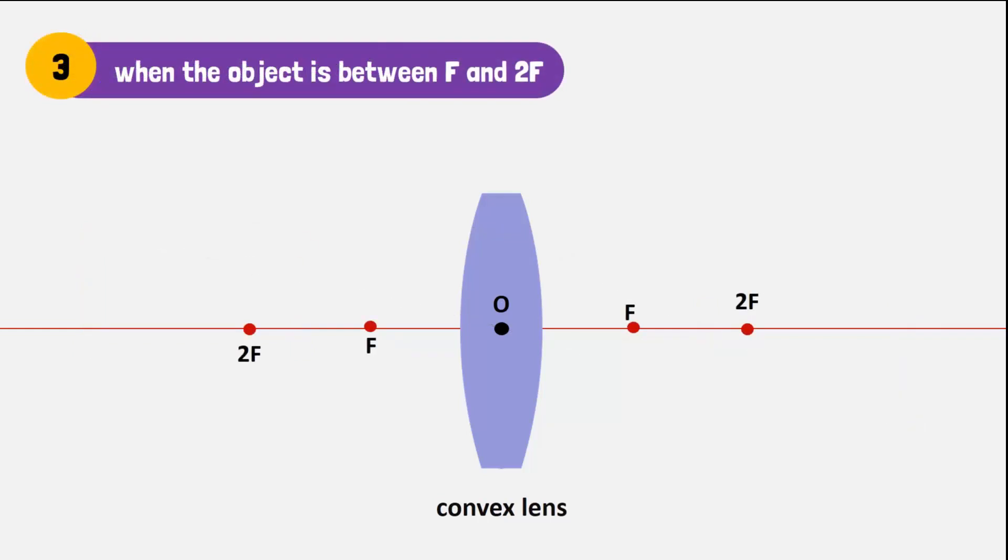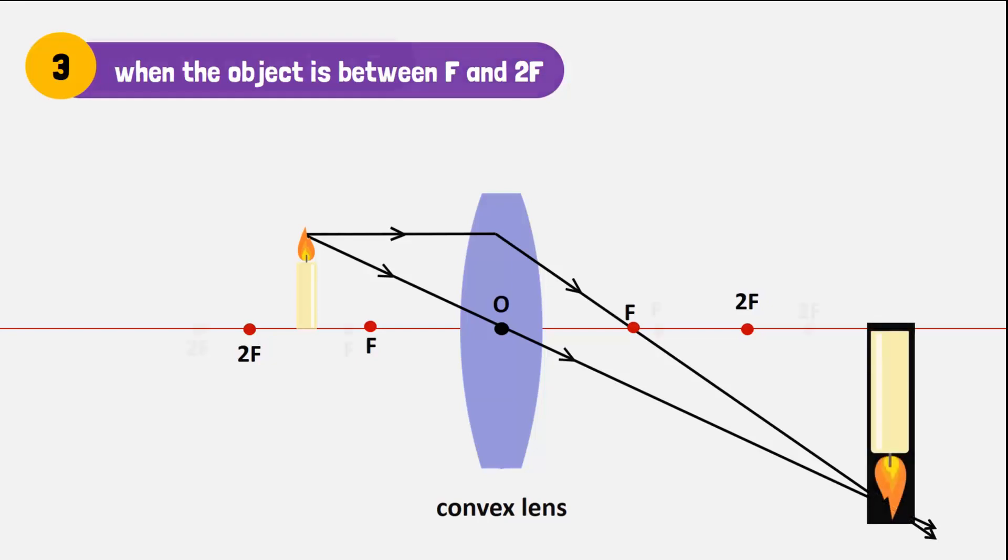However, if the candle is placed between F and 2F of the convex lens, the rays of light will converge beyond 2F on the other side of the lens. The image formed will be real, inverted, and much larger in size compared to the object.